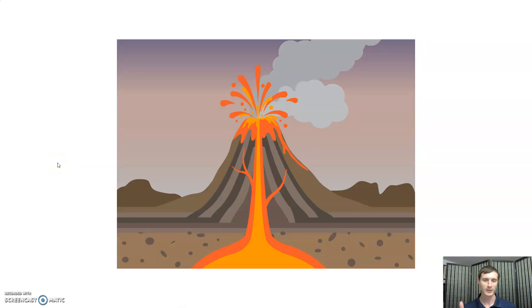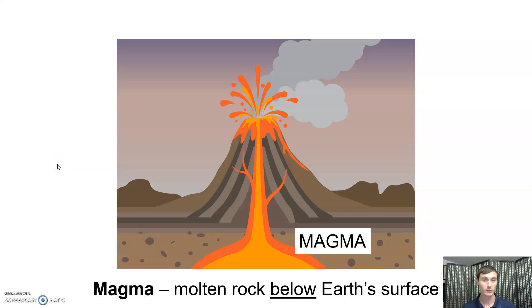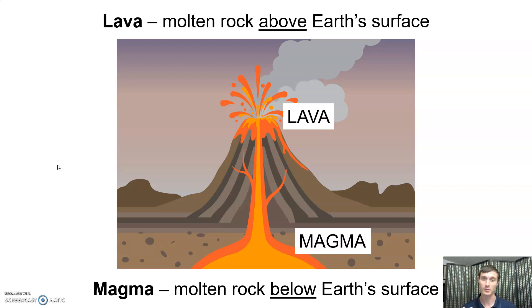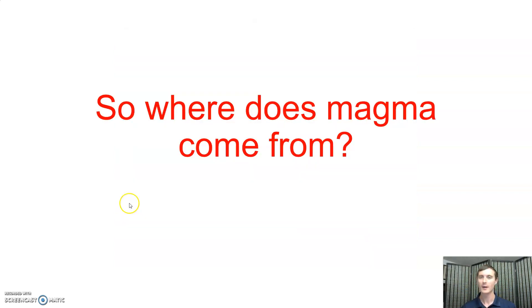Before we can get to the fun stuff though, we have to do a little bit of terminology. There's magma, which is what liquid rock, molten rock is called when it's beneath the surface, and then you have lava, which is molten rock when it's above the surface. But this magma, the stuff underneath the volcano that feeds it and fuels it, where does this magma come from?